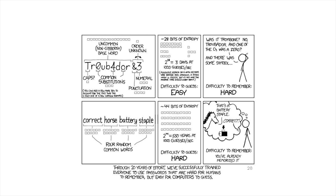XKCD's author Randall Munroe recommends four random words chosen from a dictionary of 2,000 words. He feels that at a thousand guesses per second this would take 550 years. In reality, at a million guesses per second, it's like six months — not great. But if you remember the image — a horse saying 'that's a battery staple, correct' — and humans are good at remembering images, you could remember 'correct horse battery staple.' A passphrase is a phrase you enter; it's long, harder to guess, and you don't have to worry about symbols and numbers.